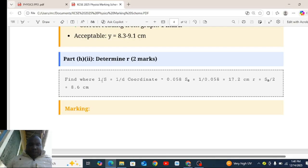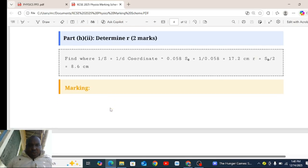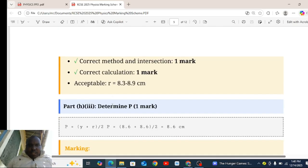Find where 1 over S equal to 1 over D coordinate. That is 0.058. The reciprocal of that is 17.2. The range is 8.9. That is the correct answer for number 2.